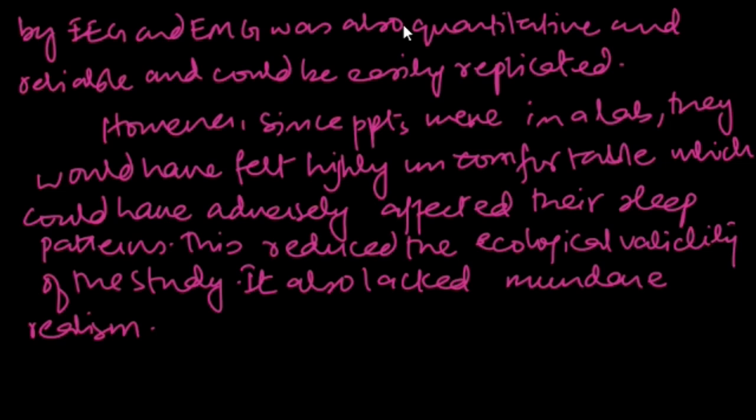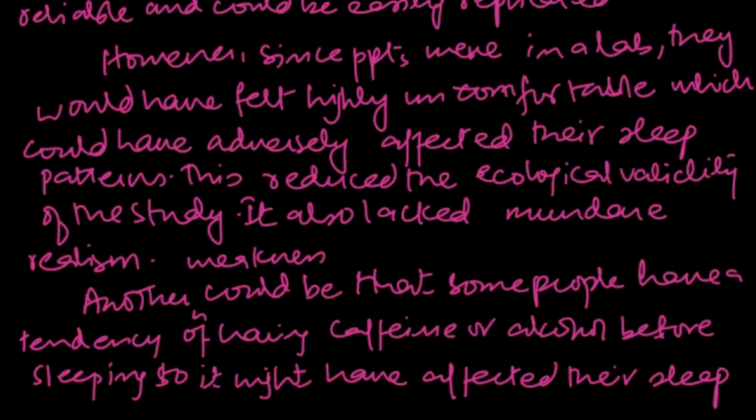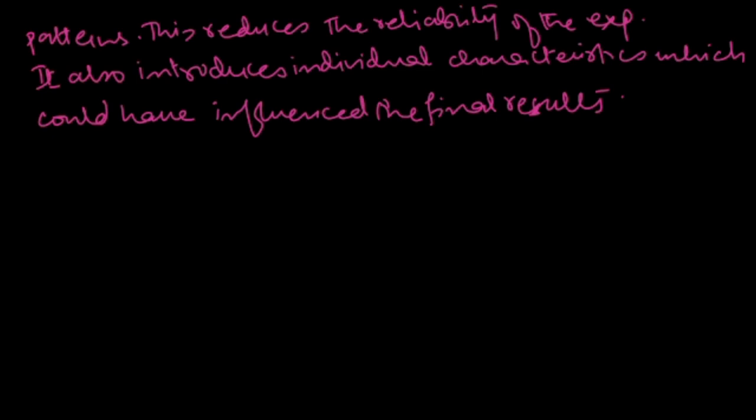Another weakness: I have written the word weakness to point it out. Then another could be that some people have a tendency of having caffeine or alcohol before going to sleep. So it would have a negative impact as well on the sleep patterns. This reduces the reliability of the experiment. It also introduces individual characteristics because it could have been different for everyone. Some people have a tendency, some don't. So how they would have created that? So this is another weakness, and this would have influenced the final results.